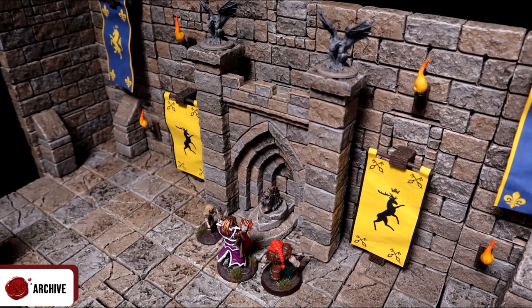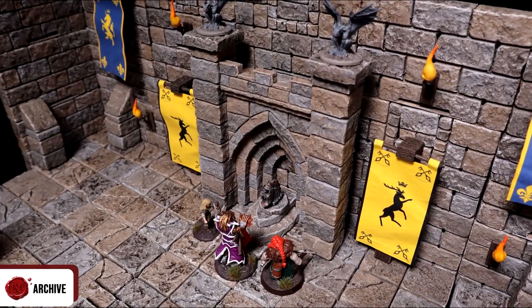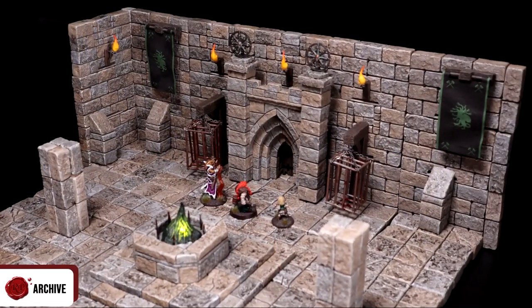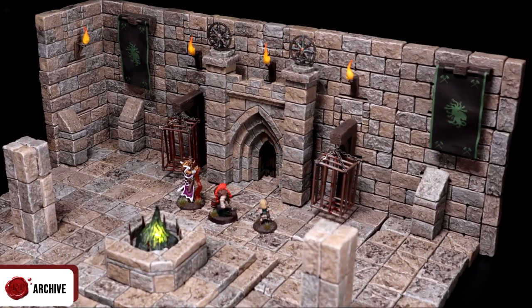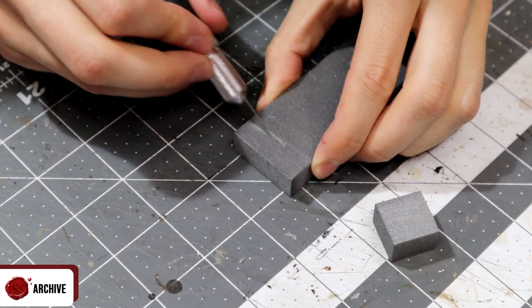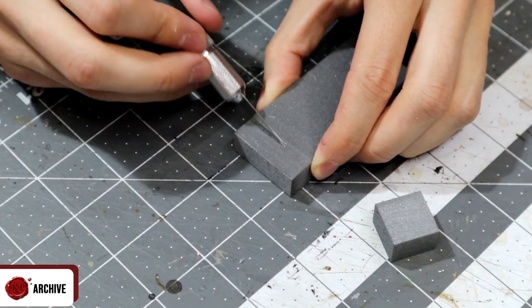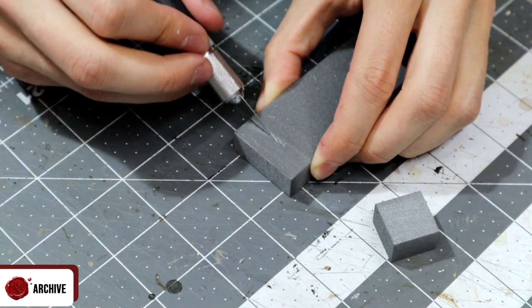Now that piece will work just fine in the interior of a dungeon as an ornate shrine or entrance, but to use it outside, we'll need to make a little stair piece. I used a half inch thick piece of three inch by one and a quarter inch XPS foam to place underneath the main piece.